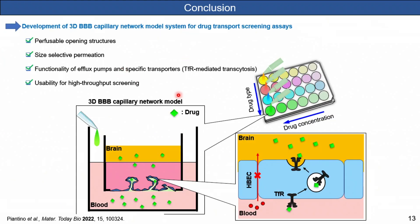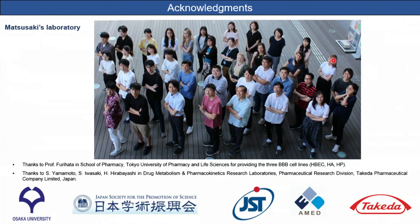In conclusion, we developed a 3D BBB capillary network model that shows opening capillary structure at the bottom of the hydrogel and displays several native BBB properties, including size-selective permeation of different molecular weight dextrans, functional efflux pump activity, and specific transportation systems. As it is a static transwell-based model, it can easily fit into a multi-well plate for high-throughput drug screening. I would like to thank all my lab mates, collaborators, and funders. I would be happy to answer any questions.